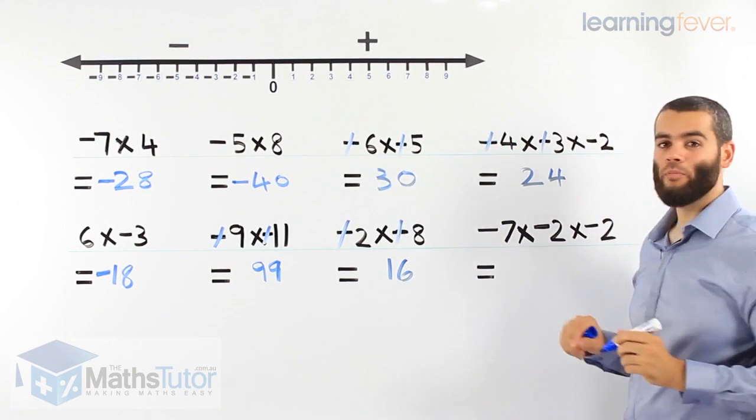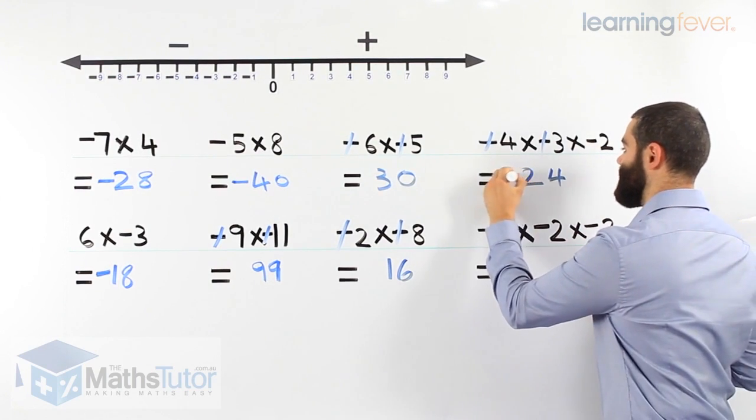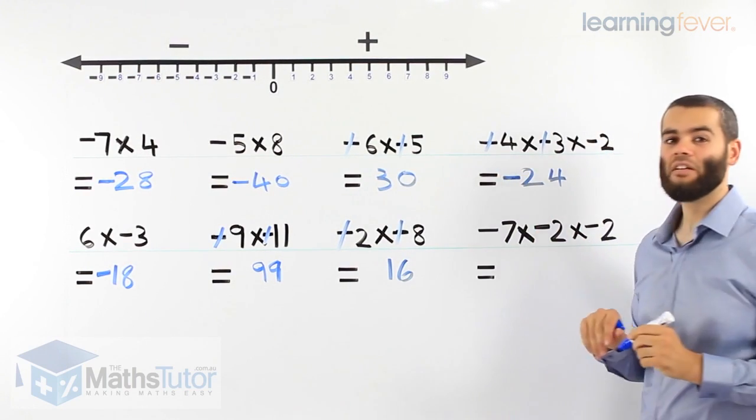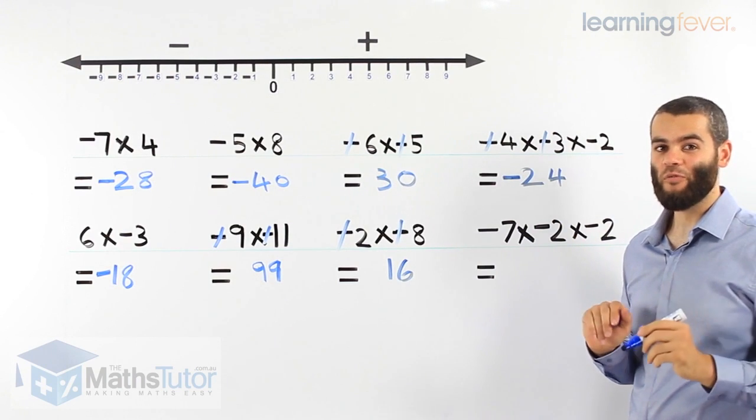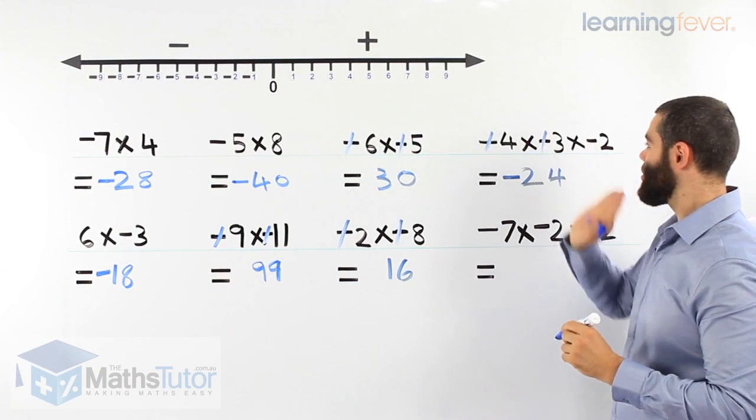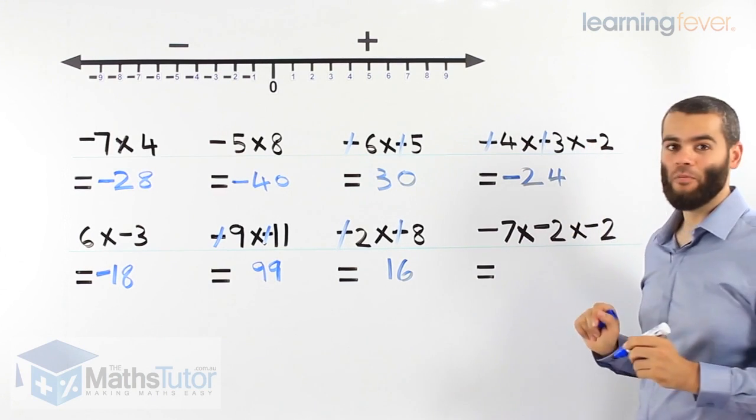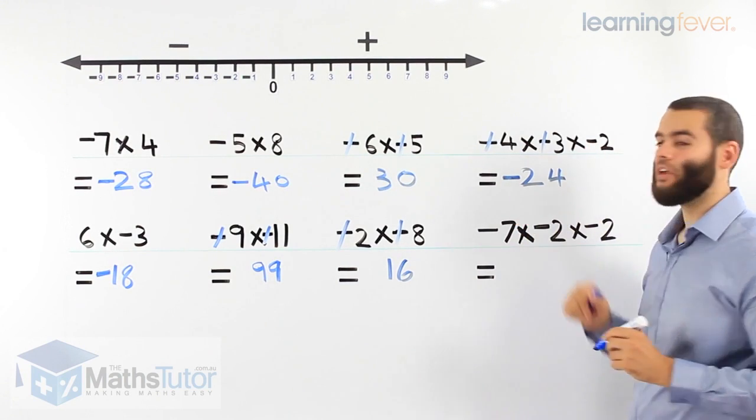This guy here has got no partner, Nigel, no friends, he stays. So our answer is negative 24. The two go, see you later, one is left, he stays home. Negative 24, there it is.